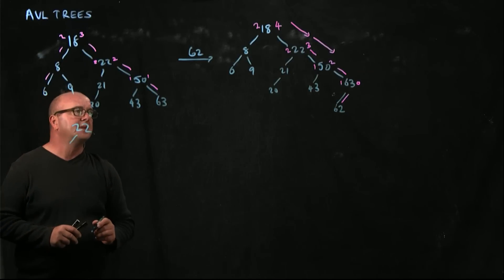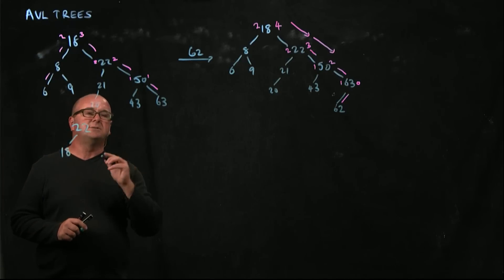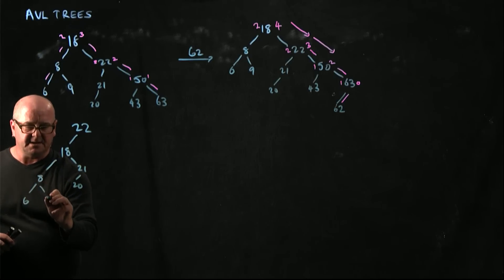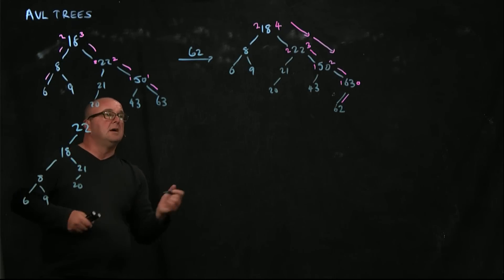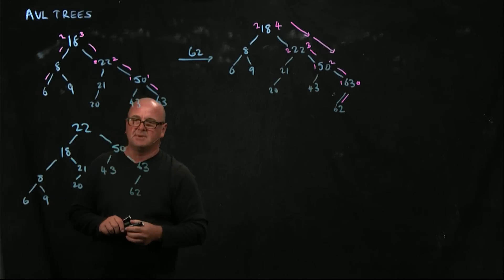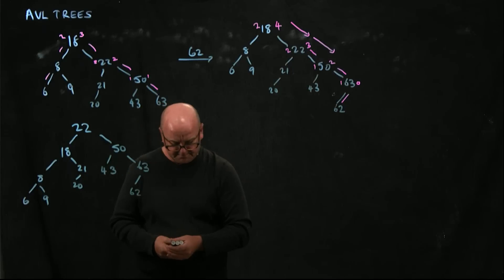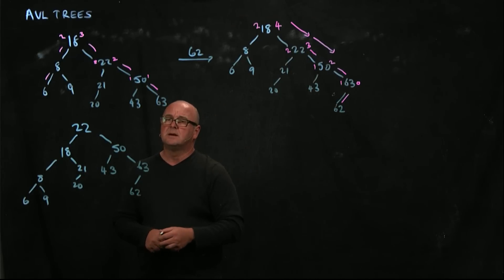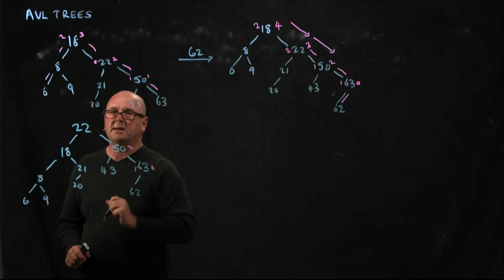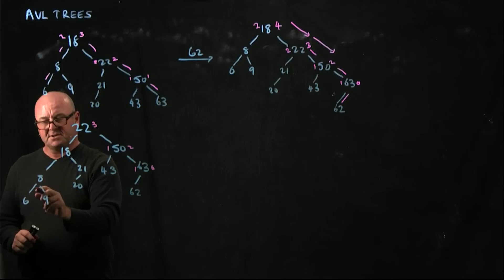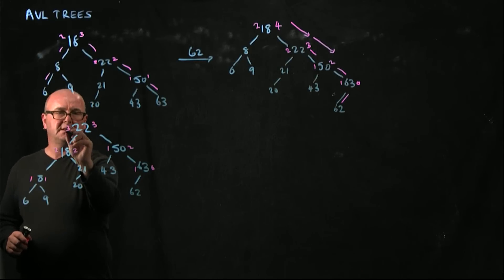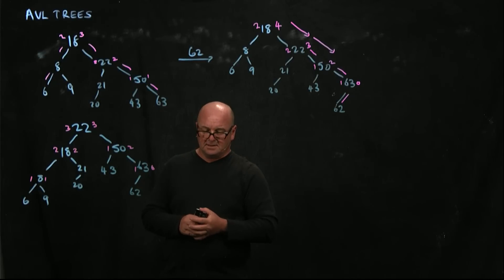After the left rotation, 22 becomes the new root. 18 becomes 22's new left child, with 21 and 20 as 18's right subtree. The 8, 6, and 9 stay the same. Our 50, 63, 62, and 43 also remain the same. Is that a balanced tree? We've got heights of 1 and 0, 2 and 1, and 3 on the right side. On the left subtree we've got 1 and 1, 2 and 2, and 3 and 3 — so we remain balanced.